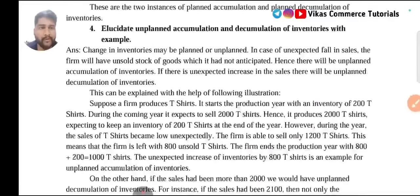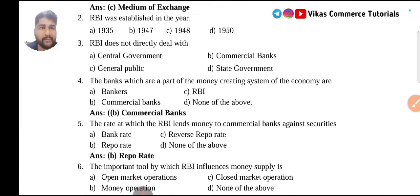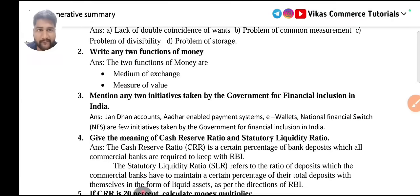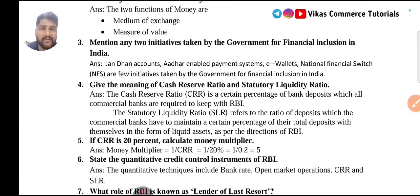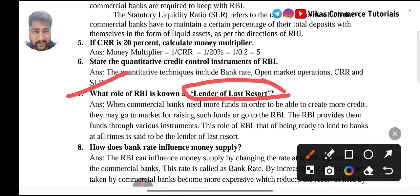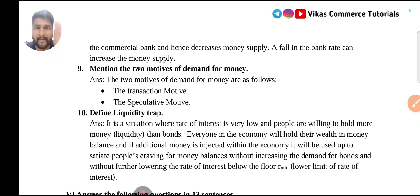Coming to Chapter 3 from Part B, that is Money and Banking. For two marks in money and banking: functions of money are already mentioned in the four-marks category. Another important question that may be asked is question number seven: what role of RBI is known as lender of last resort? What do you mean by lender of last resort, and what does RBI actually do as a lender of last resort? This question you need to study. Only this question is important according to the question papers.